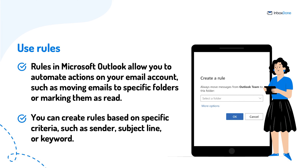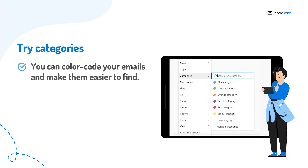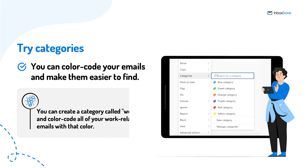Number two: try categories. Using categories in Outlook, you can color code your emails and make them easier to find. For example, you can create a category called "work" and color code all your work-related emails with that color. This makes it easy to distinguish between work-related emails and everything else.